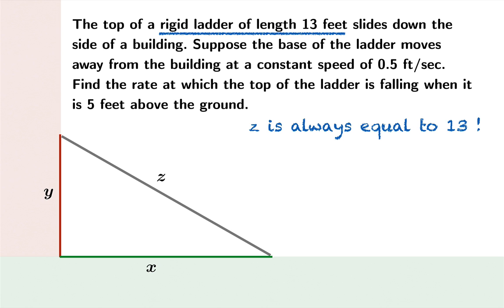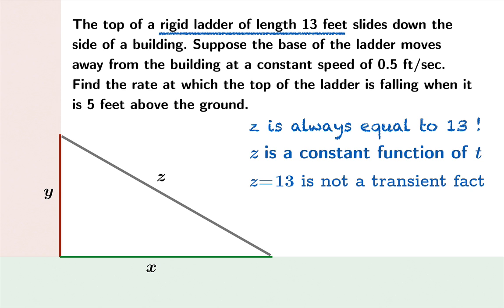It means z is always equal to 13, or put another way, z is a constant function of t. In terms of the language we've been using for related rates problems, z equals 13 is not a transient fact. It's actually a persistent fact. It's always true. Z is always 13.